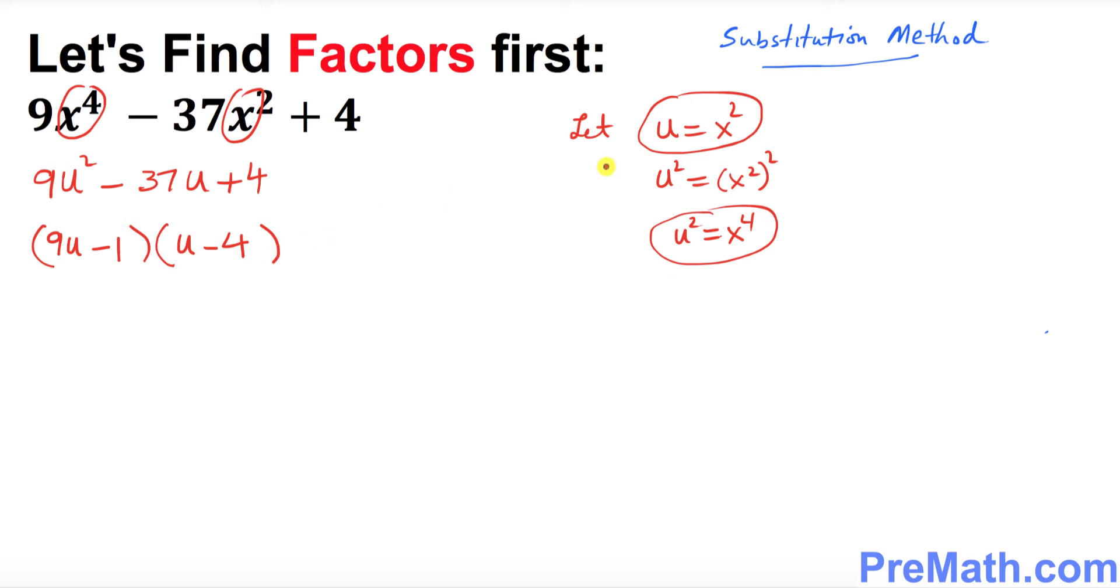So once we got this one, u minus 4, now we're going to go ahead and plug back the x variable. At the very first place u was x square, so I can write as 9u is x square minus 1, likewise u, let's put it back again, x square minus 4.